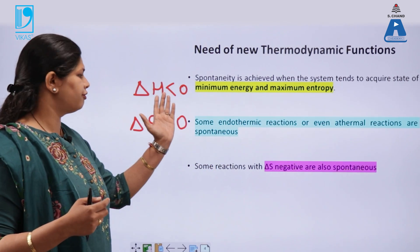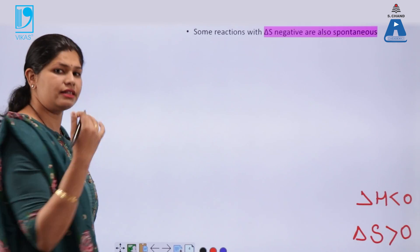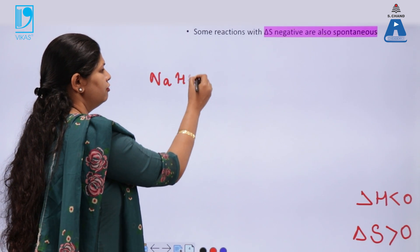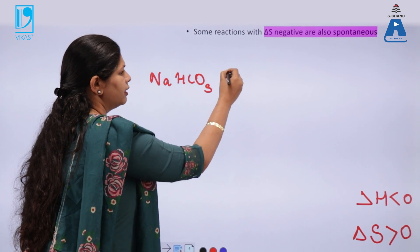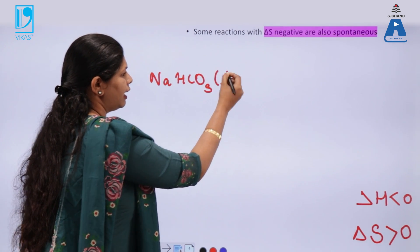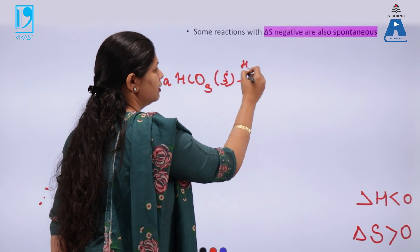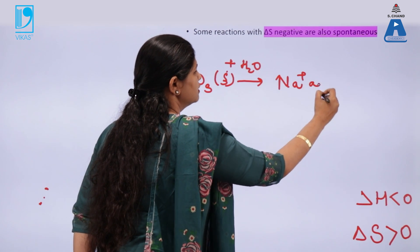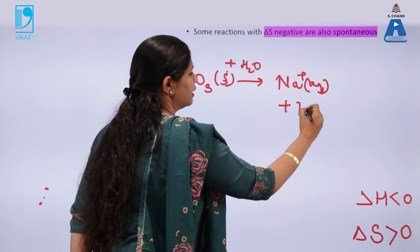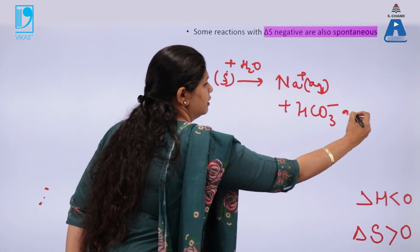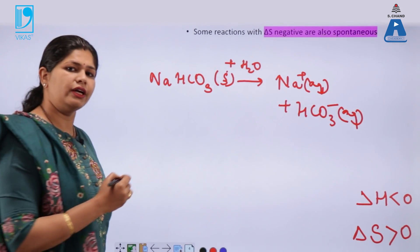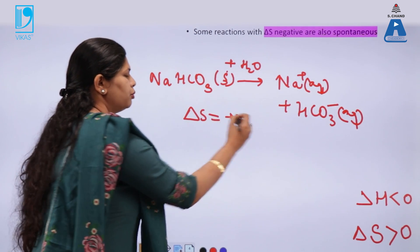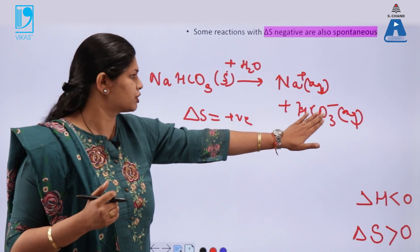Let's say we are dissolving sodium bicarbonate in water. Sodium bicarbonate is solid and on dissolving it in water, it forms sodium ions and bicarbonate ions. Entropically, this reaction is fine because delta S is positive — we are moving from a more ordered structure to a less ordered structure.